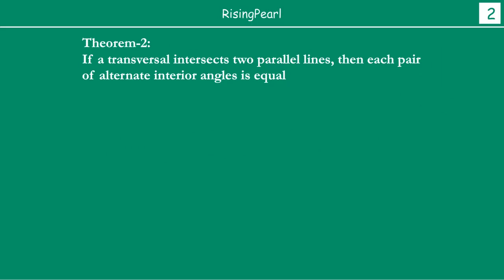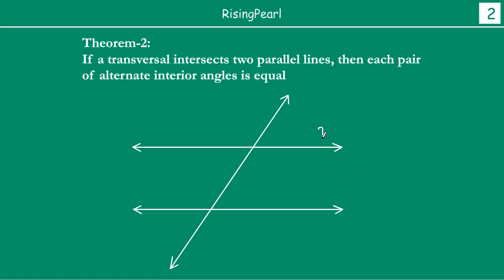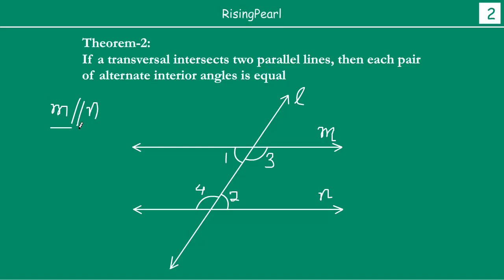Let us draw the parallel lines. We have drawn two parallel lines: line M and line N. Line L is our transversal. M and N are parallel lines, and L is the transversal. The alternate interior angles are angle one and angle two — they are one alternate interior pair — and angle three and angle four are the other alternate interior pair. It is given that line M is parallel to line N, and L is a transversal.